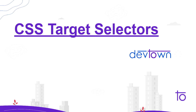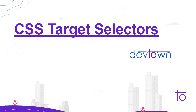In the previous video we had seen different types of selectors — the ID and class selector. In this video we are going to see what target selectors are. Let me give you a basic definition first, and after that we are going to see these selectors with the help of some examples so that you can get a proper idea of how to use this particular selector.